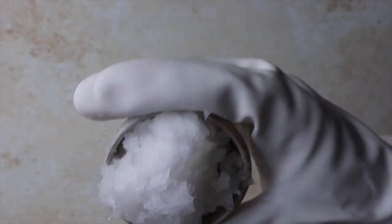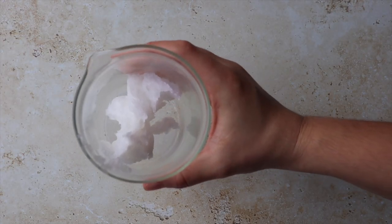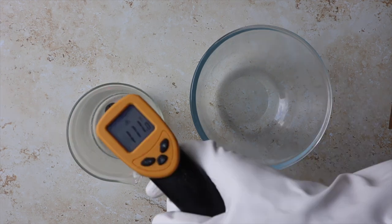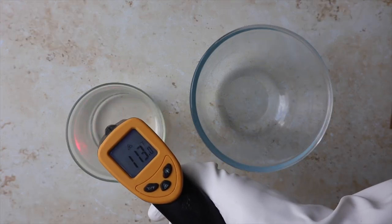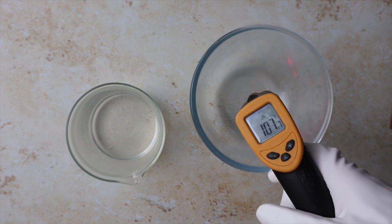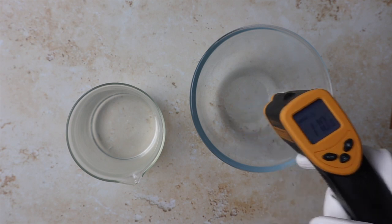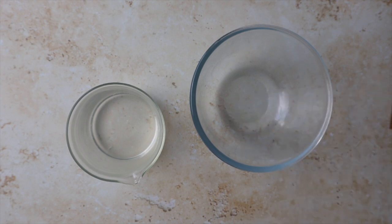At this stage we need to allow the lye solution to cool down so in the meantime we can go ahead and melt the coconut oil. Temperature is very important in soap making. The lye solution and our oils should be roughly at the same temperature and for this recipe we're aiming at about 110 Fahrenheit which is 43 degrees Celsius.